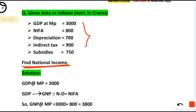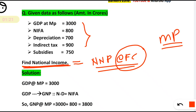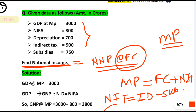National income is nothing but Net National Product at factor cost (NNP at factor cost). Now understand the difference between factor cost and market price. Market price is the price in which taxes are included, so market price equals factor cost plus net indirect taxes. Net indirect taxes means you take indirect tax and subtract the subsidies — that is the basic you should know.